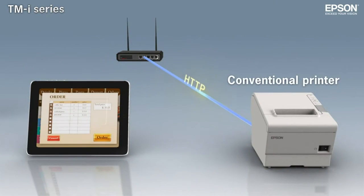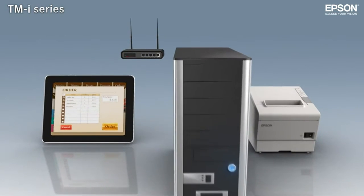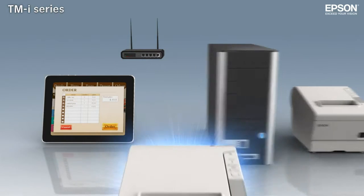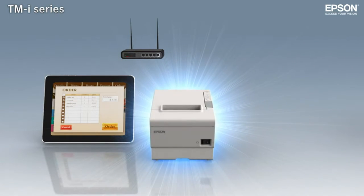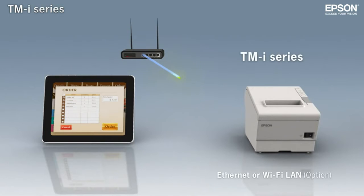But conventional POS printers can't understand HTTP commands, making it necessary to use a print server. Now, Epson TMI series printers come with built-in support for HTTP and web application printing.